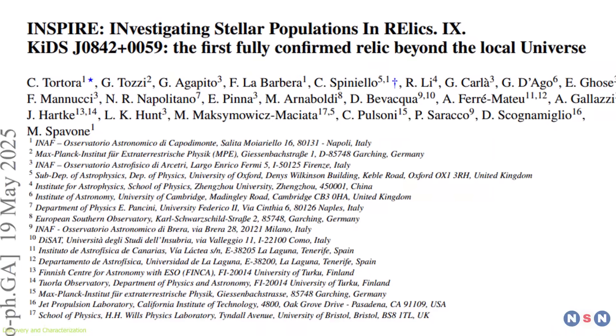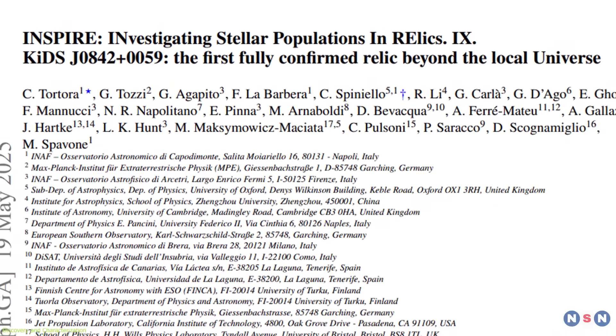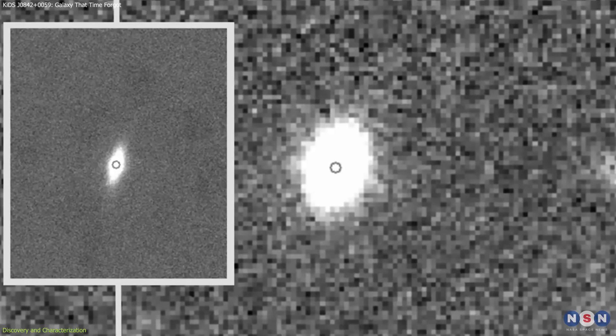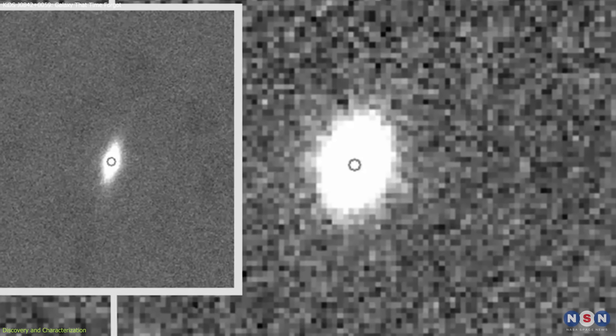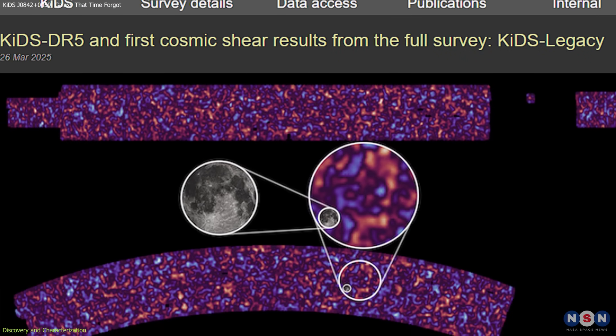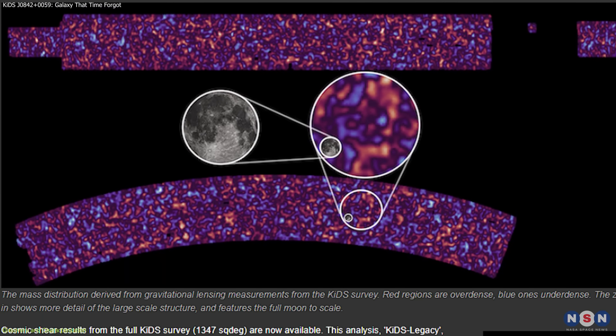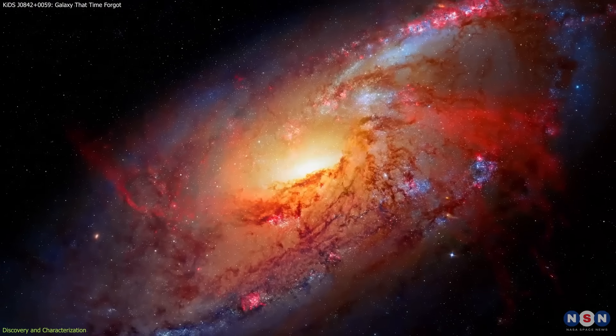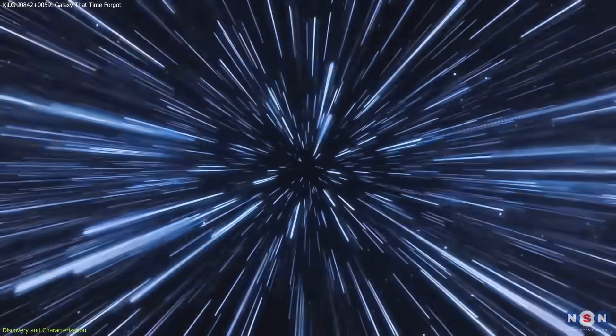KIDS J0842+0059 was first identified in 2018 through the Kilo Degree Survey, a deep imaging project aimed at studying cosmic structure and dark matter distribution. The galaxy is located around 3 billion light years away.